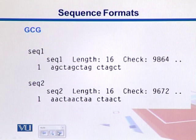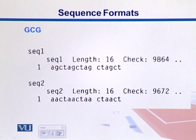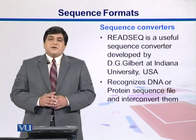GCG stands for Genetics Computer Group — a group of scientists who help the biological community develop software and training programs for biological sequence analysis. They also developed their own sequence formats, which are similar to the previous ones. Like RF, they include checksums, do not use a greater-than sign, report the length of the sequence, and can contain multiple sequences in one file.